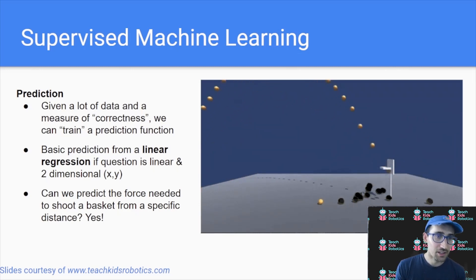In this example, we ask, can we predict the force needed to shoot a basket from a specific distance? And the answer is yes, because we have these two dimensions: we have the distance from the hoop, we have the force we're trying to guess is the right force to make the basket, and we can find this using this linear regression technique.